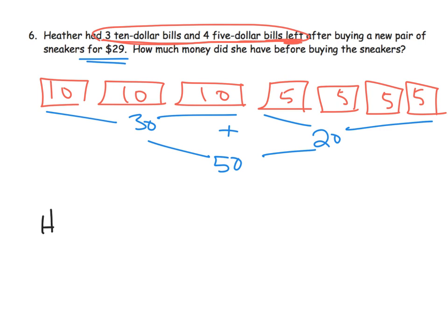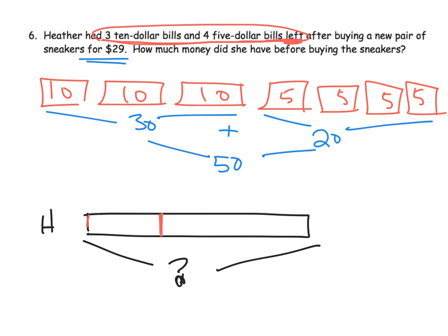So let's see. So Heather, I'm just going to put Heather. And so she had a whole bunch of money, and we don't know how much money she had at the beginning. But we know that she bought a pair of sneakers right here for $29. And left over, she had $50 because of the math that we had to do before, right?